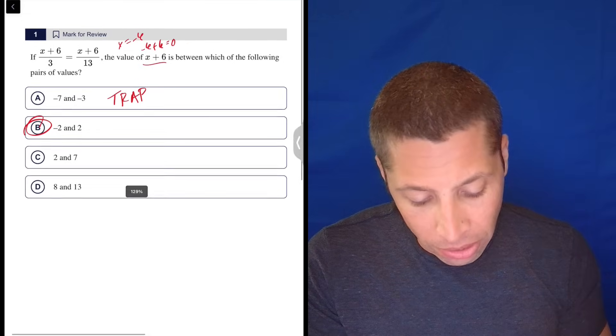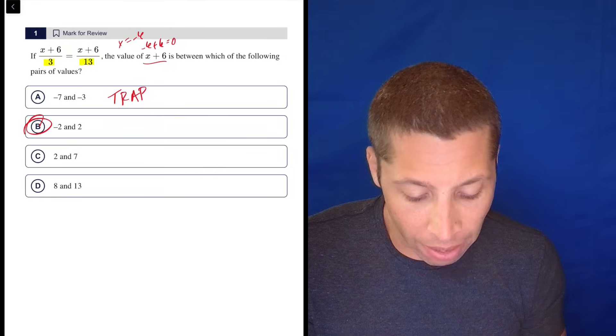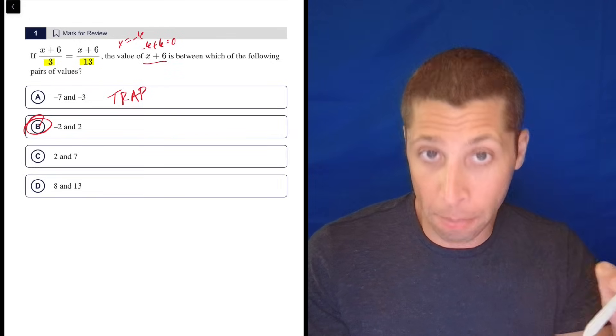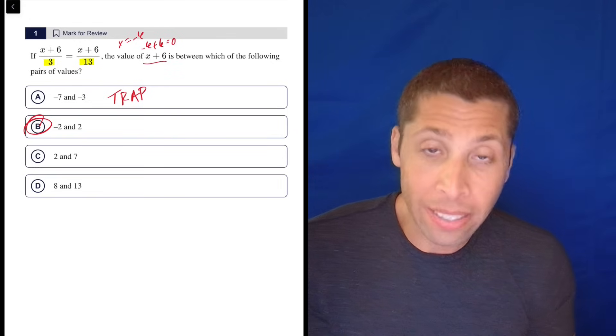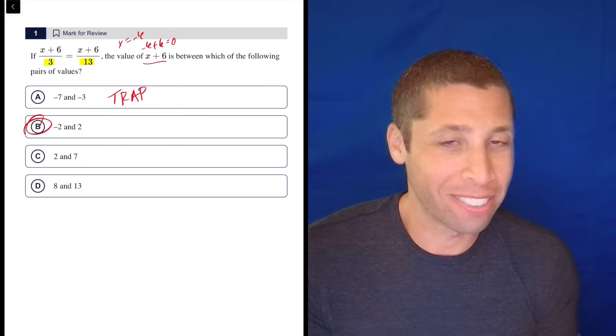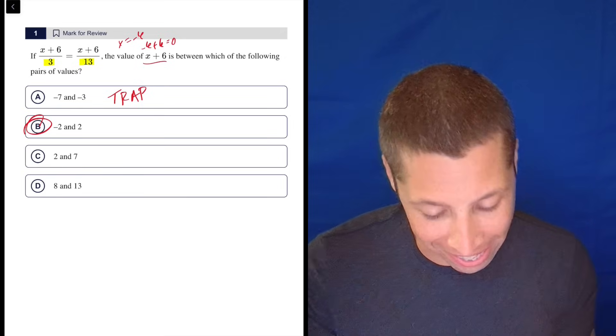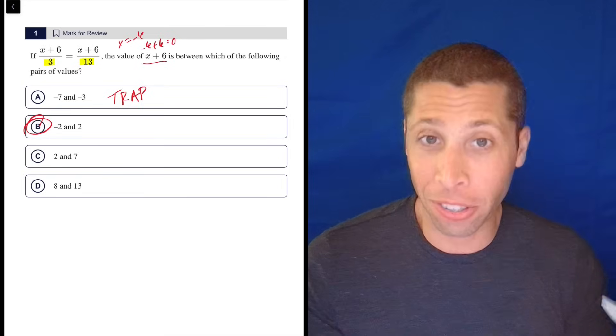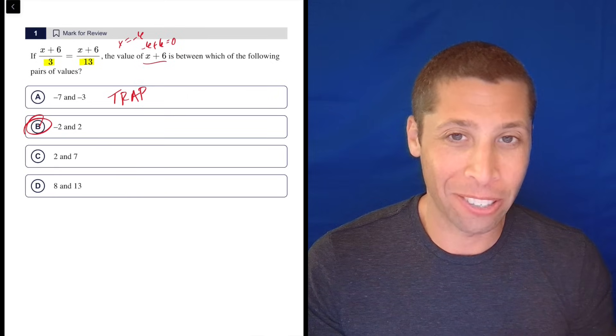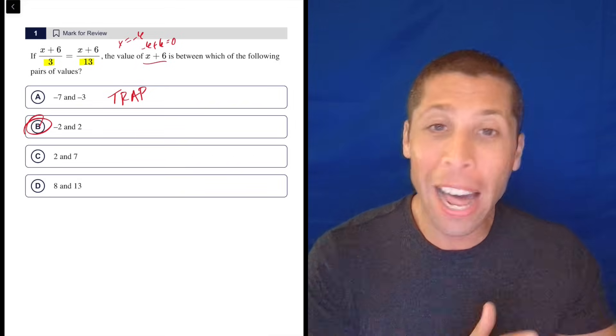Now, the reason there's a little bit of a shortcut is some of you are going to look at this and realize the only way for two fractions to have the same value but different denominators... Well, this is why this is not much of a shortcut because if you don't understand this, then it's going to be a problem. These are two fractions, they have the same numerator. The top of the fraction is the same. The bottom is different.